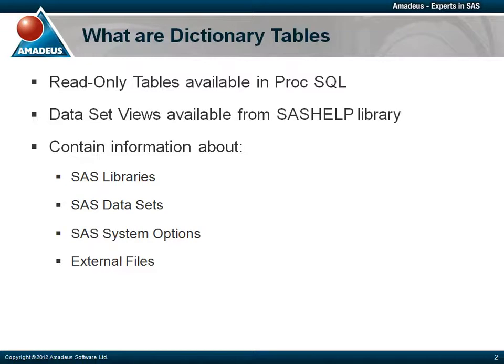SAS Dictionary Tables are read-only tables available within the PROC SQL procedure. The same tables are also available to the dataset environment through SAS Views, which are stored under the SAS Help Library. Dictionary tables contain key information about our SAS session running, including assigned libraries, datasets and views, SAS system options and external files assigned. It basically gives us a description of our system.